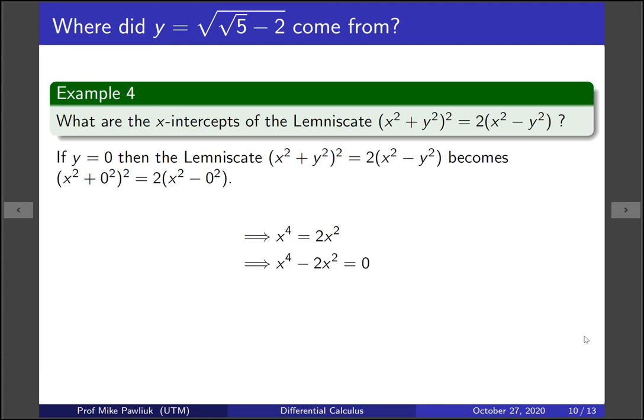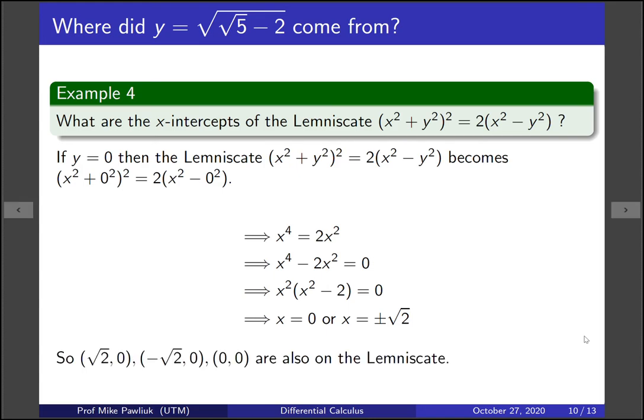Again grouping the terms on one side. Factoring. And now we can read off what are the values of x. Well x is either 0 or it's ±√2. So this gives us three x-intercepts. So (√2, 0), (-√2, 0), and (0, 0) will all be on the lemniscate.